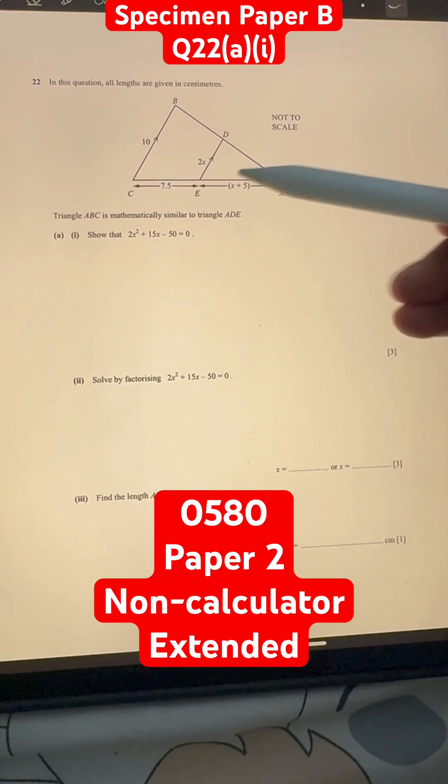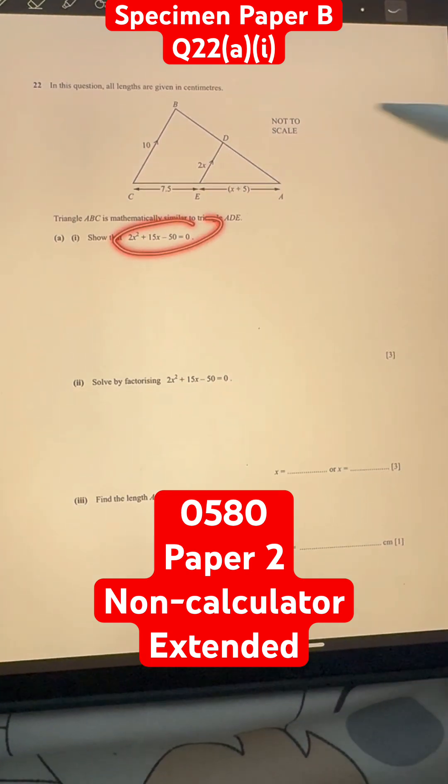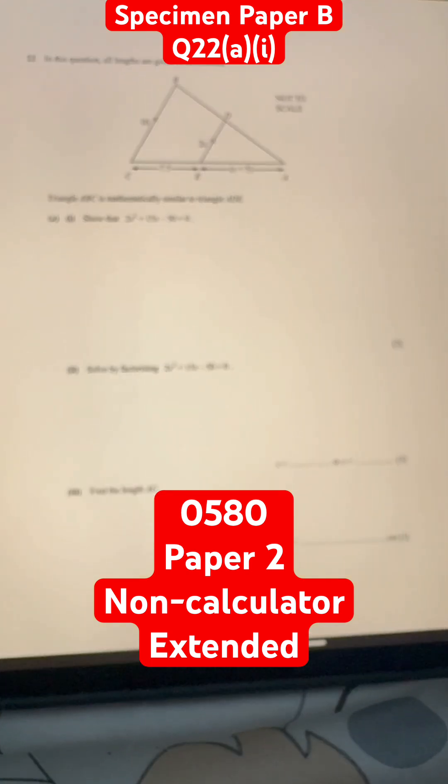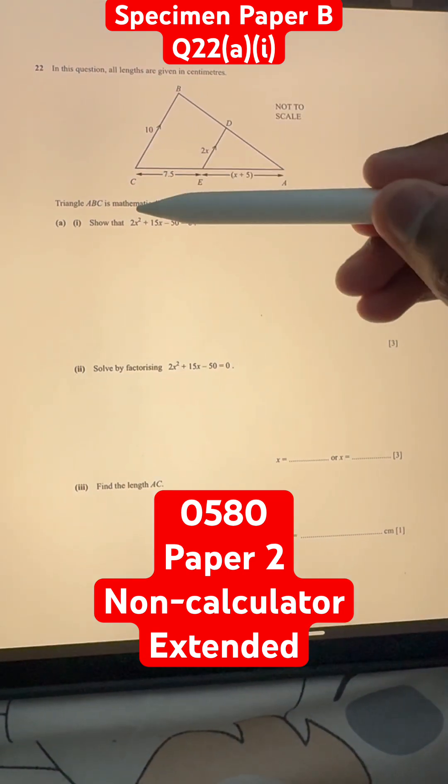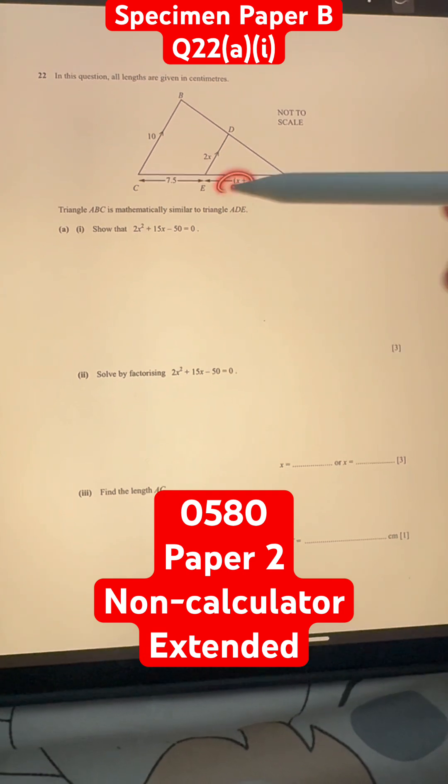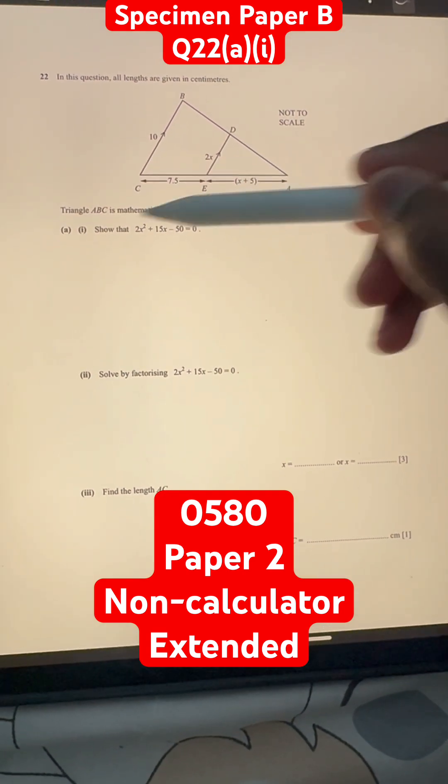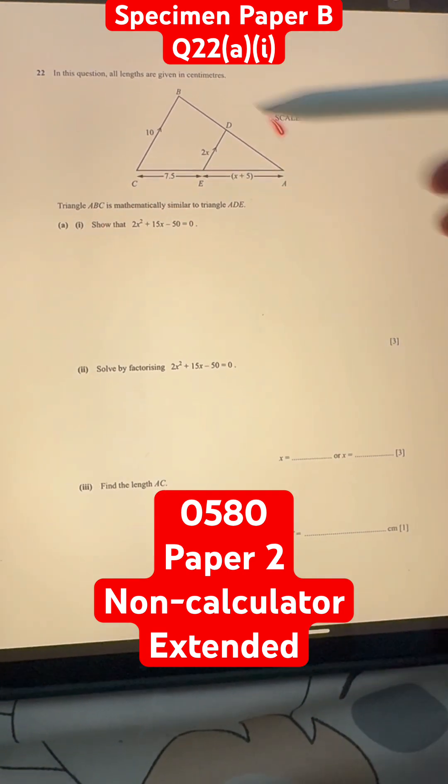Part A, part 1. Show that 2x squared plus 15x minus 50 is equal to 0. Well, we know that these triangles are similar, and we can see that this 2x is there, and there's another x component here, so we should be able to form this somehow by using these values.